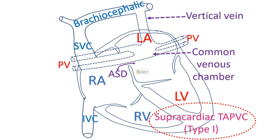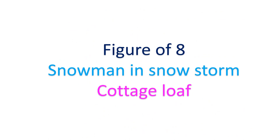The most common variety is supracardiac. In supracardiac TAPVC, the 4 pulmonary veins from the 2 lungs join together to form a common venous chamber behind the left atrium and drain upwards into a vertical vein. As the name implies, it runs vertically upwards from behind the left atrium to the left brachiocephalic vein. The brachiocephalic vein then joins the superior vena cava, which in turn drains to the right atrium. The combination of the vertical vein, dilated brachiocephalic vein, and superior vena cava produces the classical figure-of-8 shadow along with the cardiac shadow on chest X-ray. Other descriptions include snowman-in-snowstorm appearance and cottage loaf appearance.